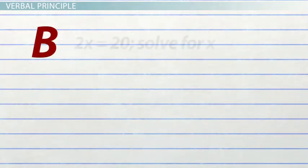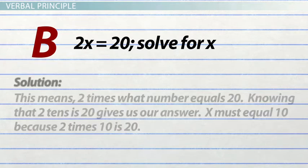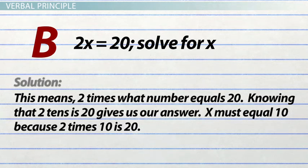The second sample is similar: 2x equals 20, solve for x. Verbally, we might say this means 2 times what number equals 20. Knowing that 2 tens is 20 gives us our answer. X must equal 10 because 2 times 10 is 20.